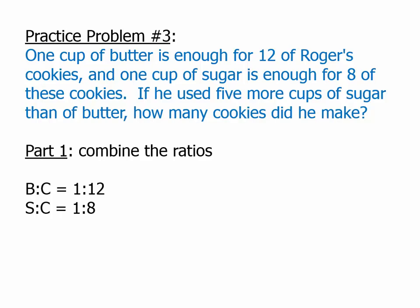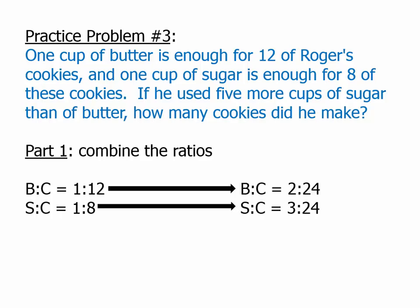And so, we have to figure out what can we multiply by. And so, what is the least common multiple of 8 and 12? Of course, it's 24. And so, we have to multiply the first one by 2 over 2 and the second one by 3 over 3. And this allows us to get this combined ratio, 2 to 3 to 24.